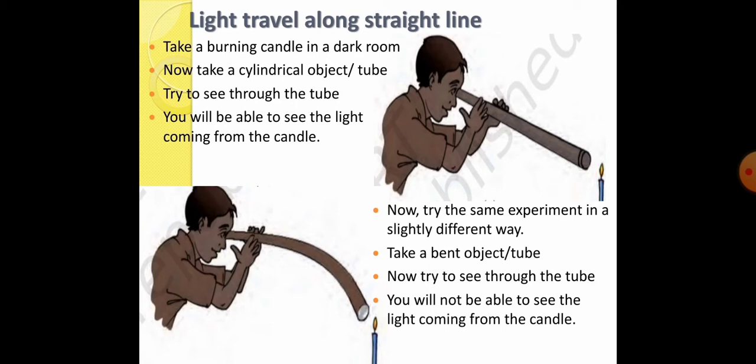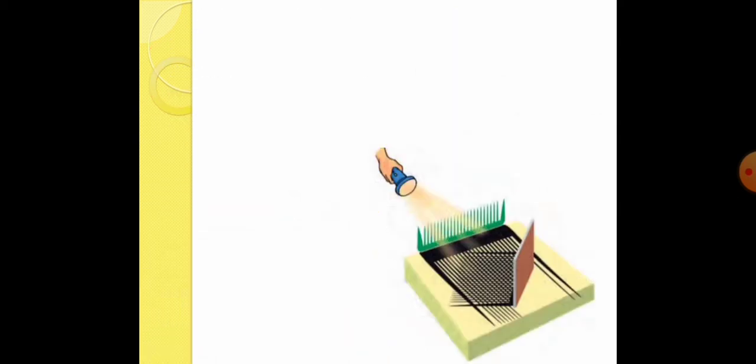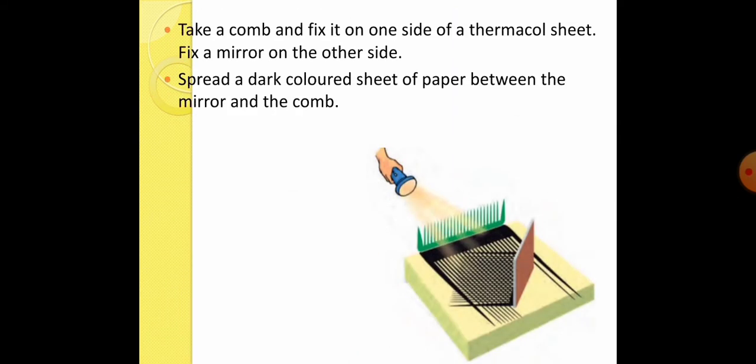So, this proved that light travels in a straight line. Now, let's do another experiment on the basis of this statement. Okay, now take a comb and fix it on one side of the thermocol sheet. Fix a mirror on the other side.